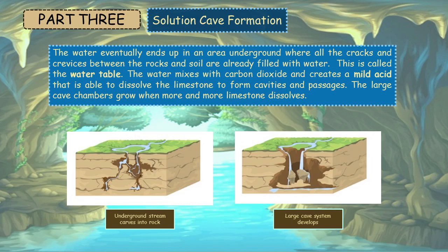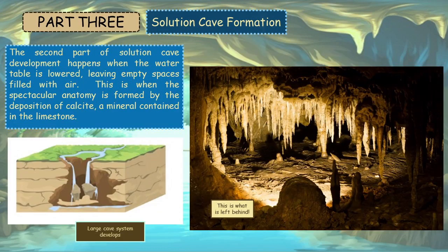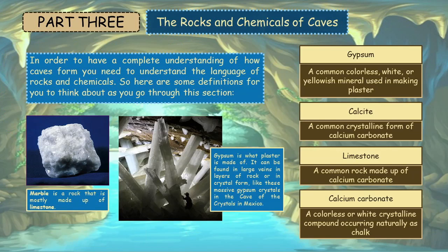This is called the water table. The water mixes with carbon dioxide and creates a mild acid that is able to dissolve the limestone to form cavities and passages. The large cave chambers grow when more and more limestone dissolves. The second part of solution cave development happens when the water table is lowered, leaving empty spaces filled with air. This is when the spectacular anatomy is formed by the deposition of calcite, a mineral contained in the limestone. In order to have a complete understanding of how caves form, you need to understand the language of rocks and chemicals.